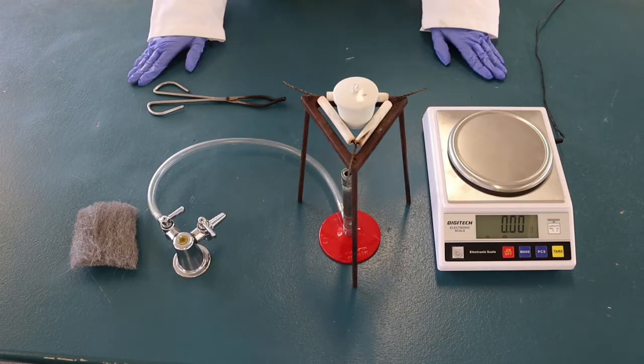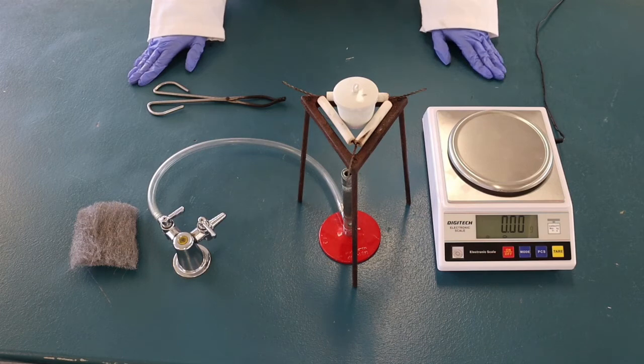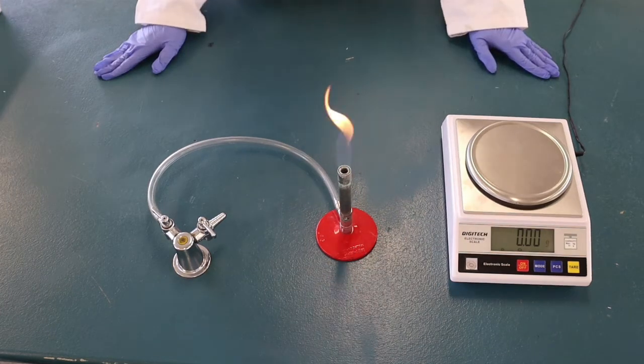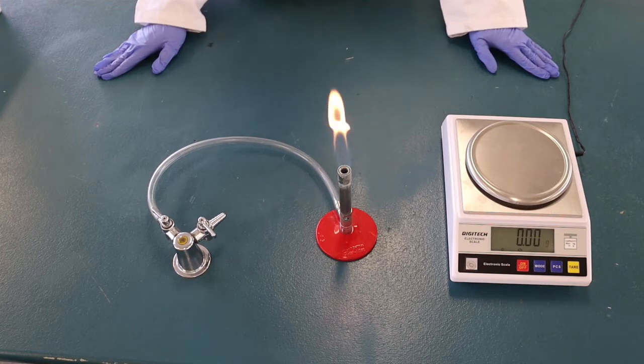If you wish to follow along with the procedure of this experiment, you can turn to page 242 in your Nelson Q-Science textbook units 1 and 2. First, we'll set up the Bunsen burner and turn on the gas and ignite the flame.